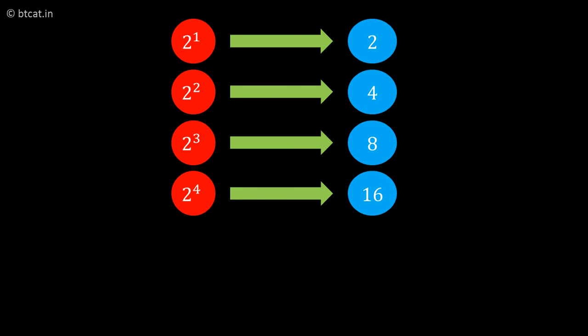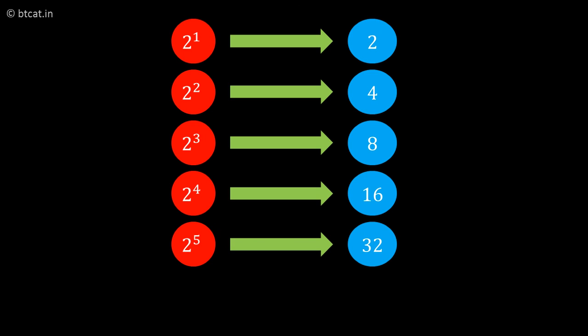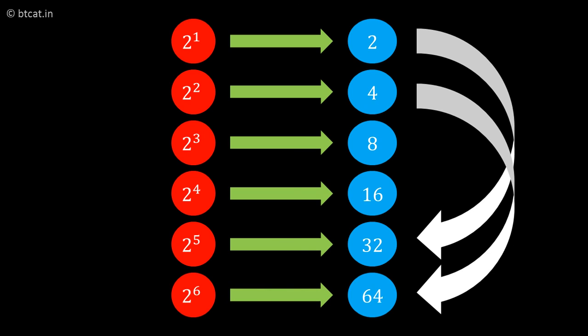But if you continue, 2 to the power 5 is 32 with last digit 2, and 2 to the power 6 is 64 with last digit 4. As you can see, the pattern has started to repeat.